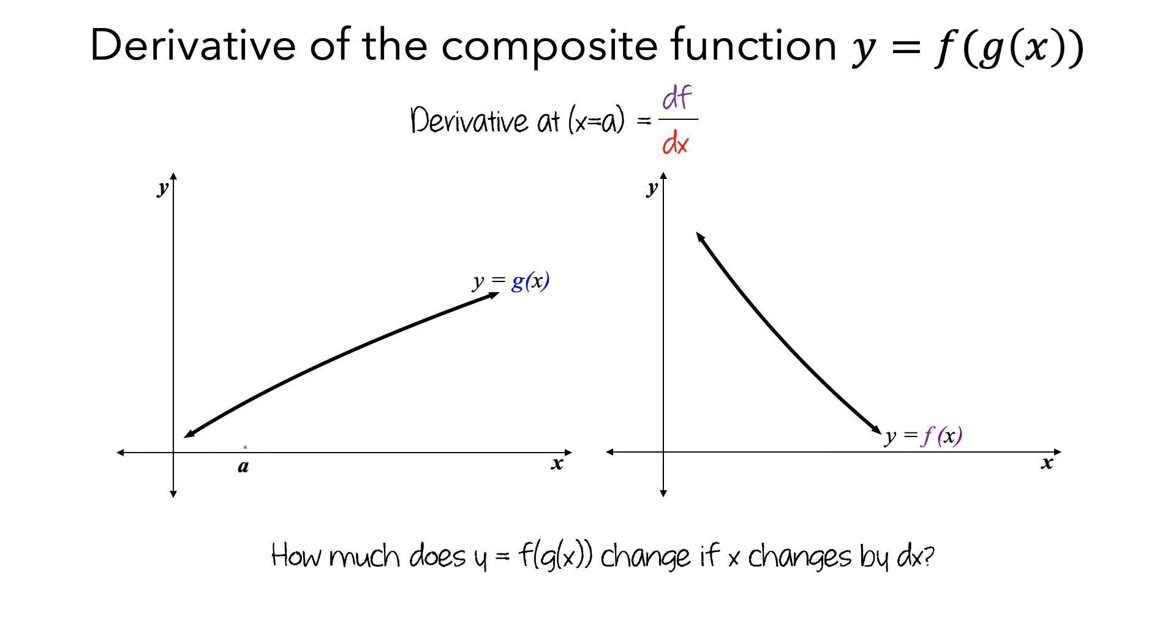Let's mark off x equals a on the graph of g(x). As x changes by a small amount from a, dx. Since we've zoomed in far enough for the graph of g to look linear, with slope equal to g prime of a, the corresponding change in g is equal to g prime of a times dx.